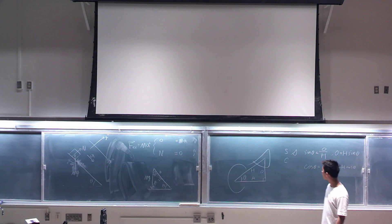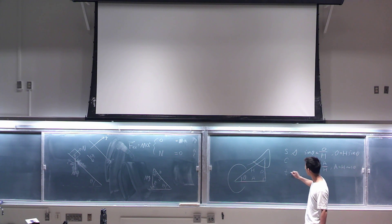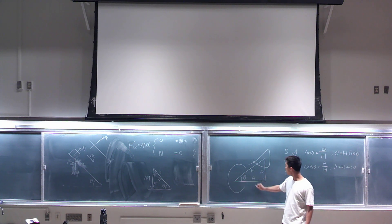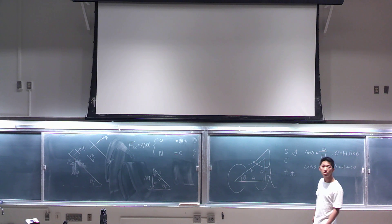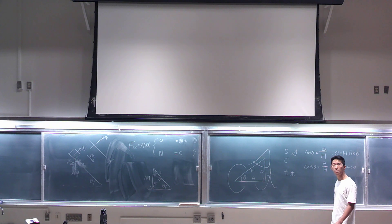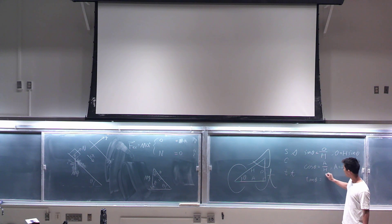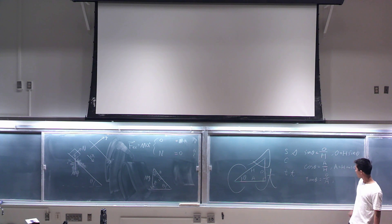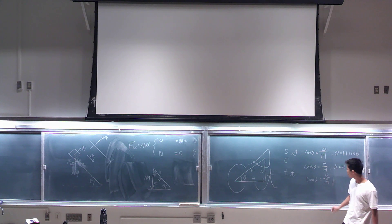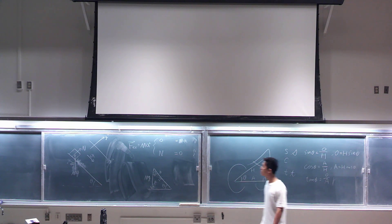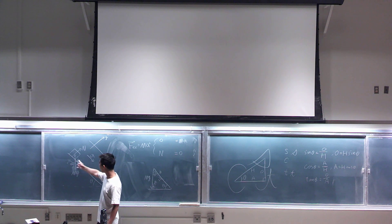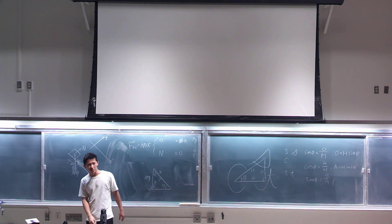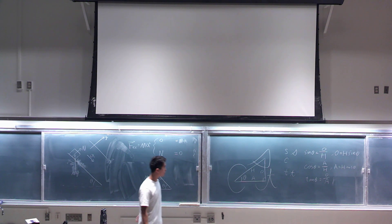Now tangent starts with 't', and tangent is opposite side over adjacent side. You can keep it like this because when you break down the components it's always the hypotenuse into opposite or adjacent side, so we don't usually use tangent too much.